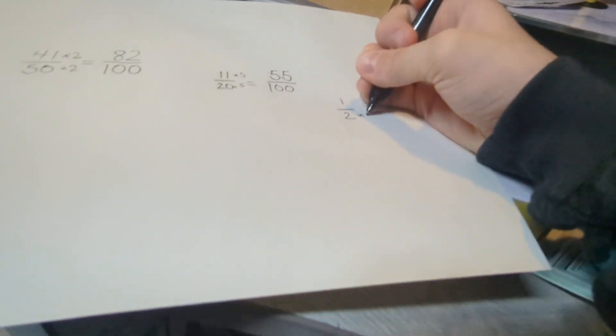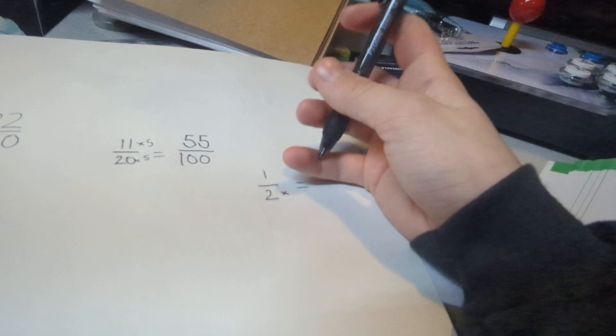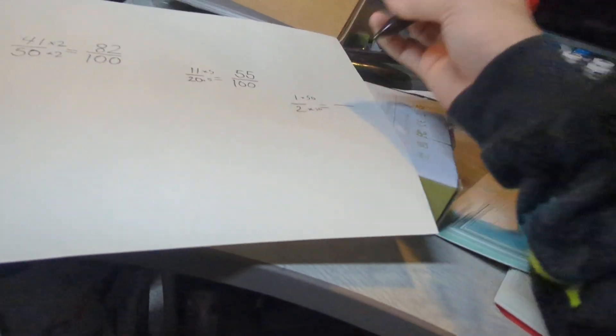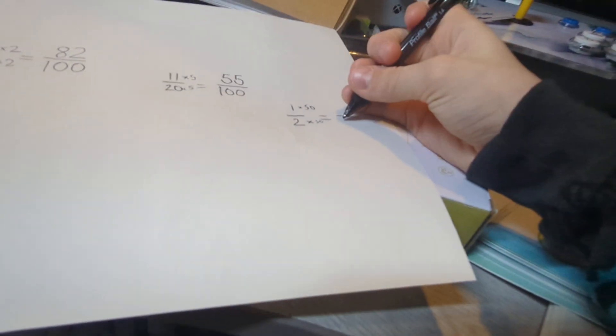There you go. So now let's try it for 1/2. Let's multiply it by, don't multiply it by 50. Try it by 50. 2 times 50 is 100.